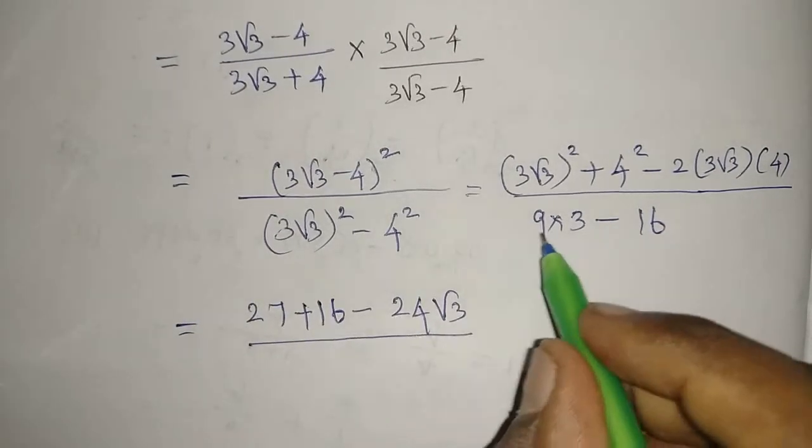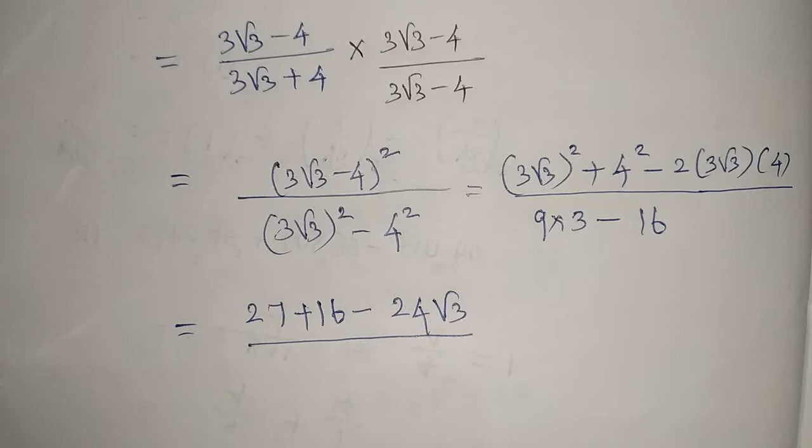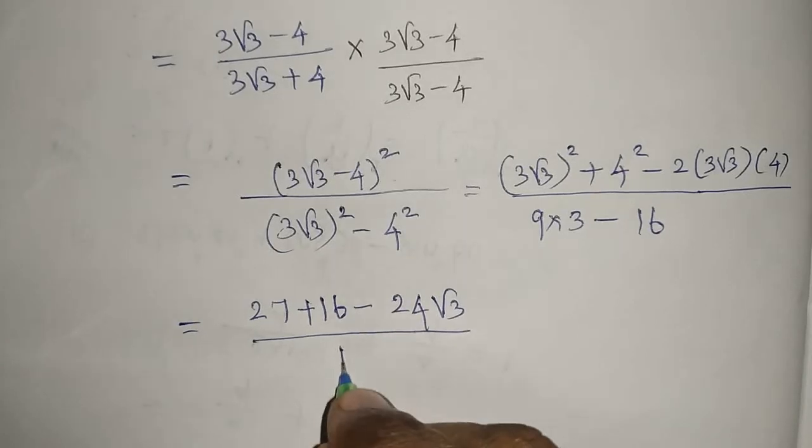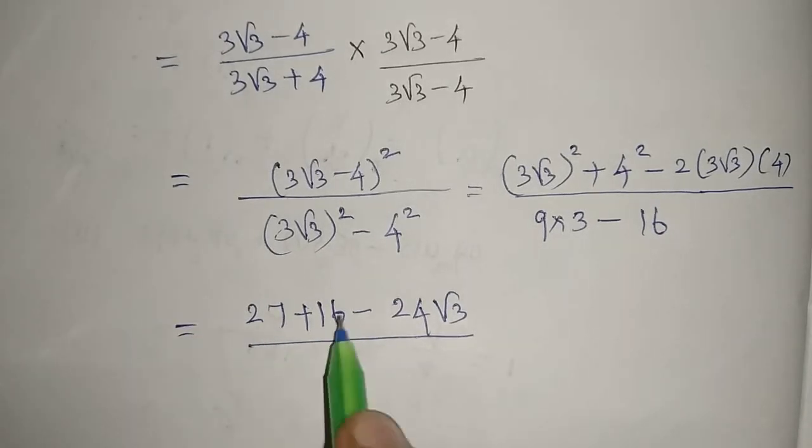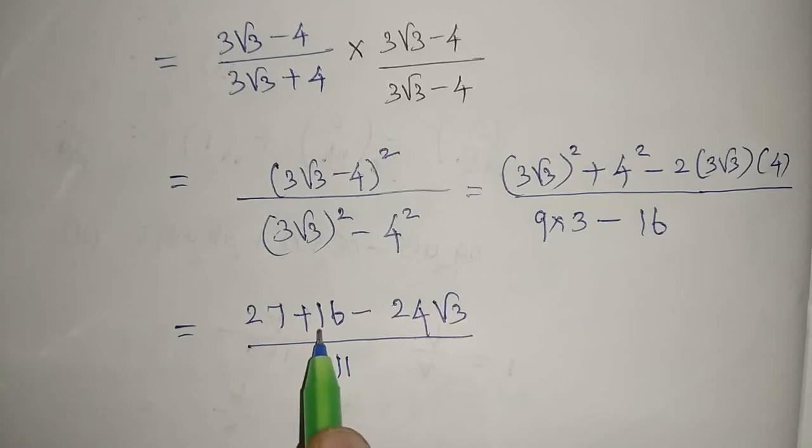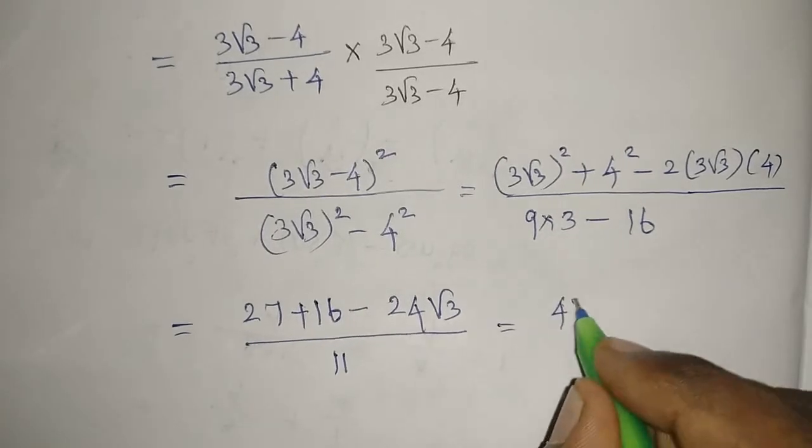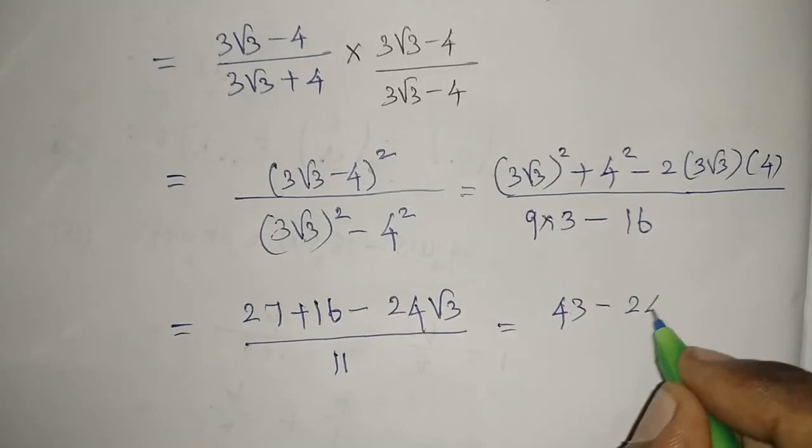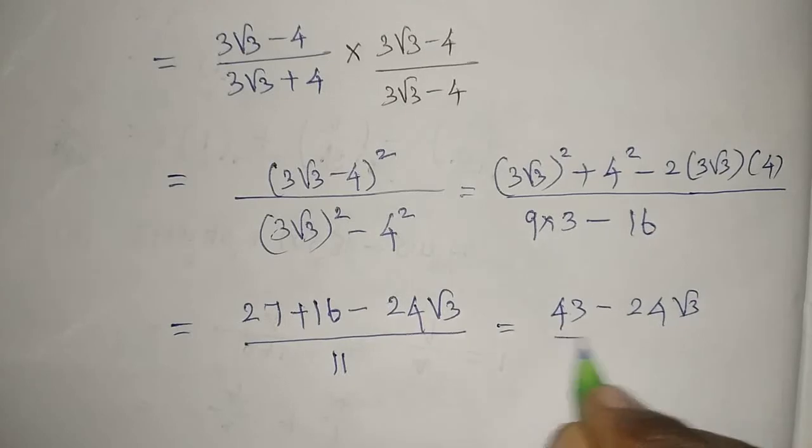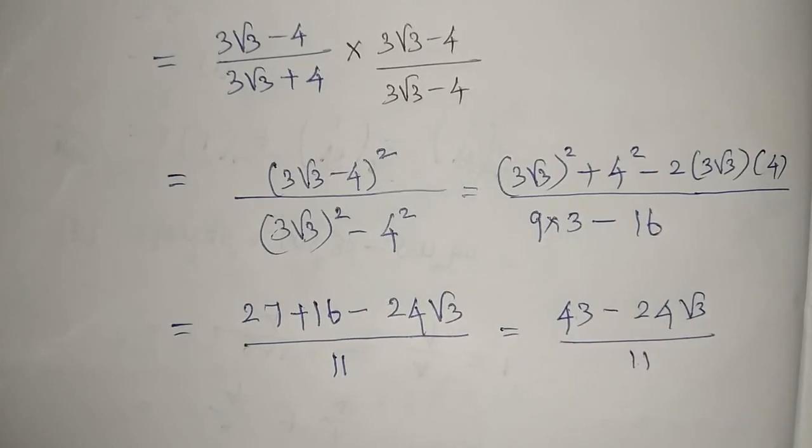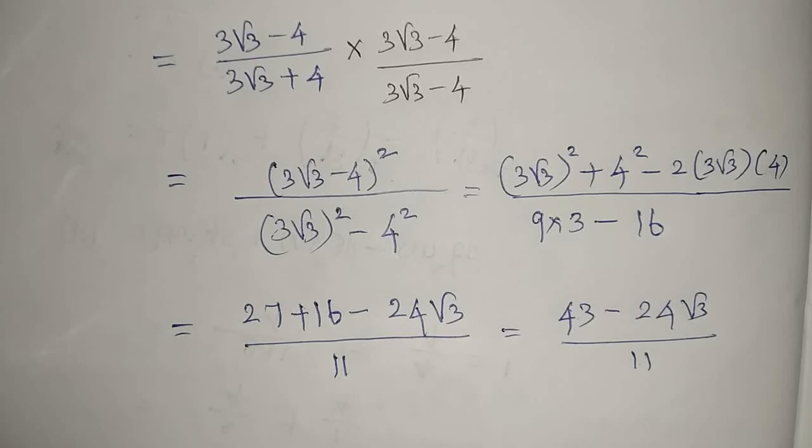Divided by 27 - 16 = 11. Now add: 27 + 16 = 43. So we get 43 - 24√3 divided by 11. That is the answer. This is for the fourth one. Thank you.